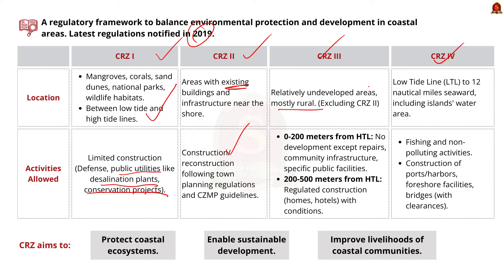CRZ2 covers developed areas close to the shore with substantial buildings and infrastructure. Construction and reconstruction are allowed as long as they follow existing town and country planning regulations and the Coastal Zone Management Plan. CRZ3 includes relatively undisturbed, largely rural areas. The area up to 200 meters from the high tide line is a no development zone where no construction is allowed except for repair of existing structures, community infrastructure, and certain public facilities. Between 200 and 500 meters from the high tide line, regulated construction is allowed for homes and hotels under specific conditions.